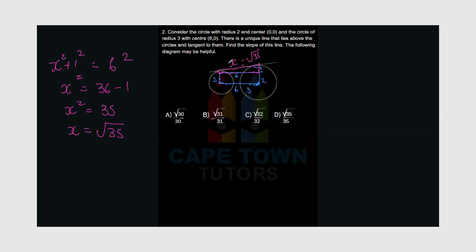So then to find the slope of this, we can then use the tan formula or the tan ratio. Now the tan ratio is opposite over adjacent. So what's the opposite side here to the angle here? So the opposite side is 1 over the root of 35, which is the adjacent side to the angle. So over the root of 35.